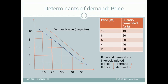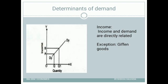Now let us move to the next determinant: income. What is the relationship between consumer income and consumer demand? Suppose the income of Mr. X increases from 10,000 rupees to 20,000 rupees — the demand will increase from Q to Q1. So income and demand are directly related.